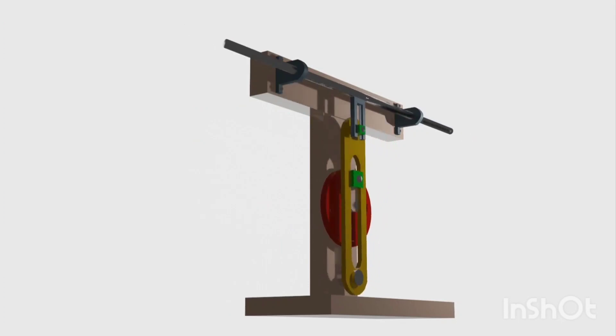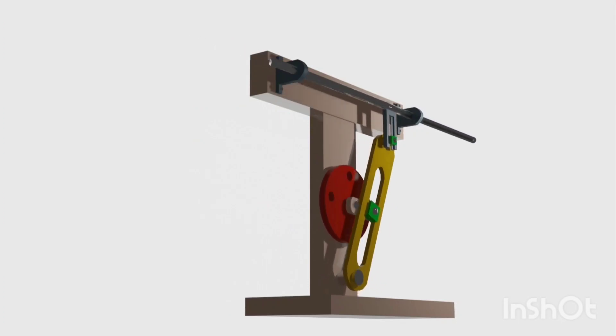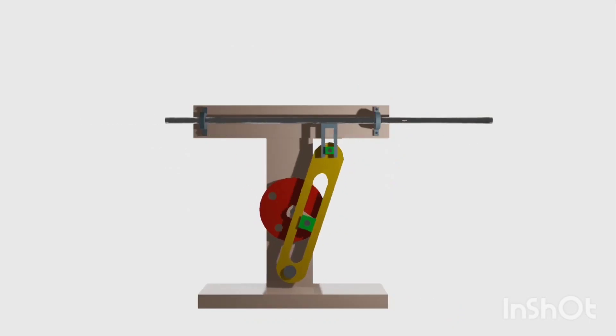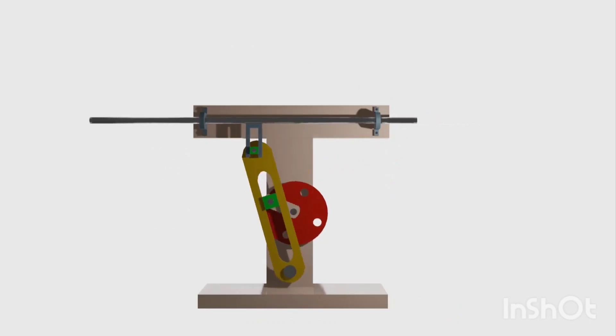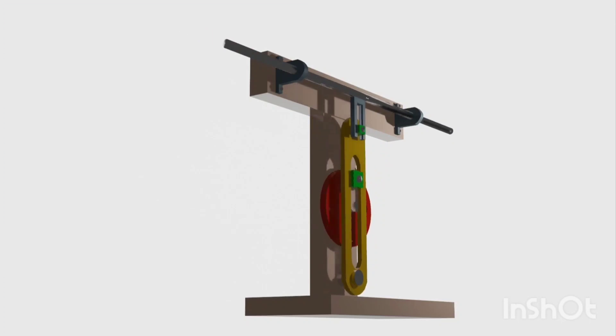The connecting rod is attached to the crank and the slotted lever through pin joints. However, in the Whitworth mechanism, the slotted lever has an additional link called the Whitworth link.